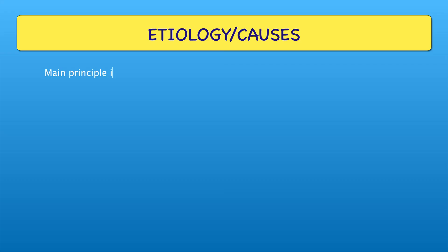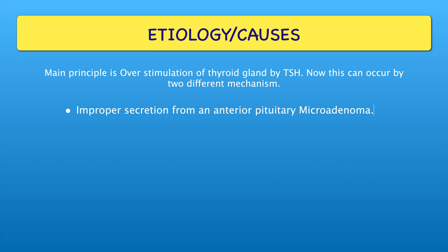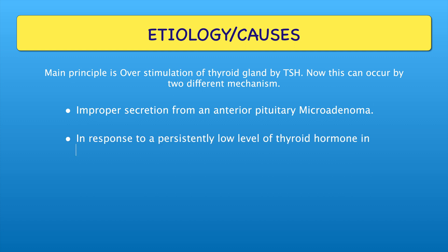Now coming to the etiology or causes. The main principle is over-stimulation of the thyroid gland by TSH. This can occur by two different mechanisms: improper secretion from an anterior pituitary microadenoma, or in response to a persistently low level of thyroid hormone in the blood.